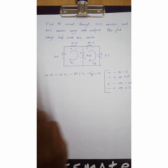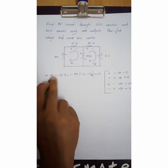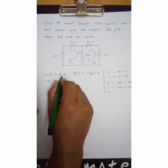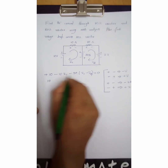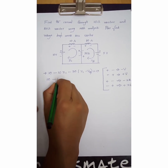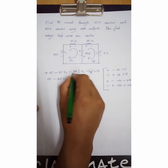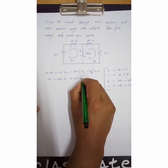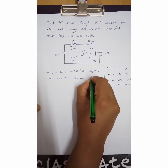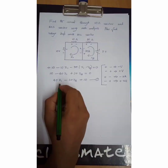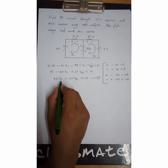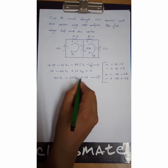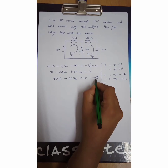Setting this equal to zero and simplifying: 10 − 10I1 − 30(I1 − I2) = 0, which gives 40I1 − 30I2 = 10. Consider this as the first equation.